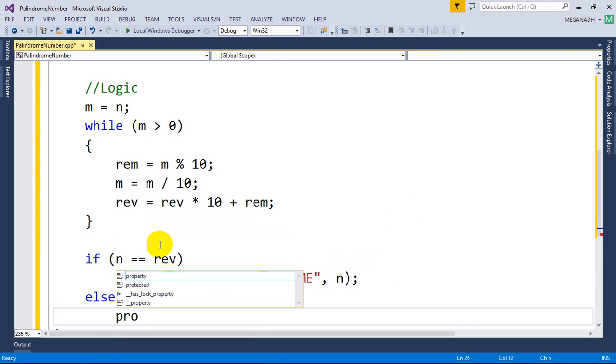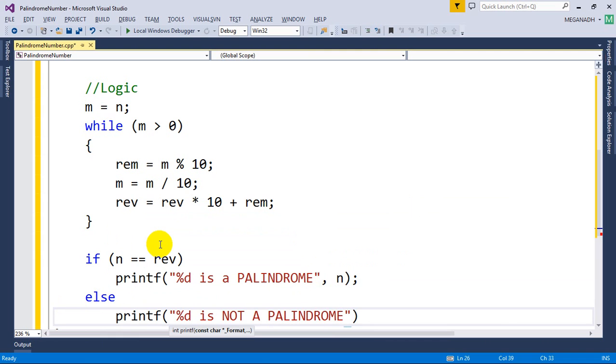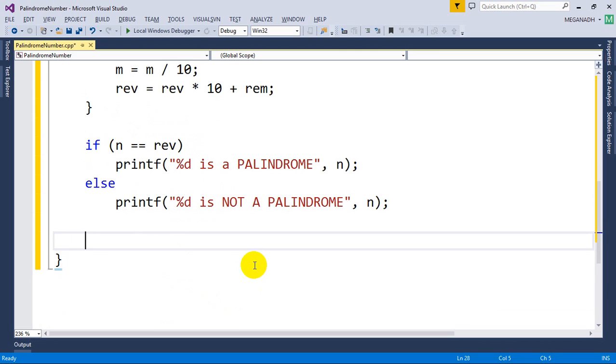And else printf percent d is not a palindrome, so now I just need to print n value here. Last we need to add getch and now we are done with the program.